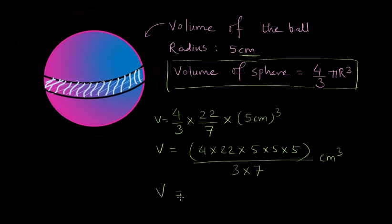Now if we compute this, we get V is equal to 11,000, a nice looking number in the numerator and 21 in the denominator centimeter cube. Let me quickly use the calculator to get this value here. And that comes out to be 523.809 centimeter cube.